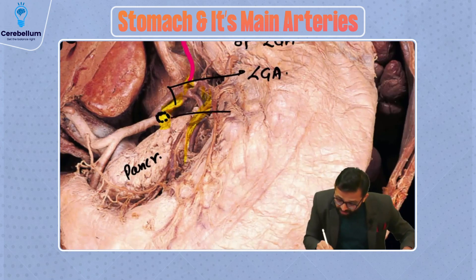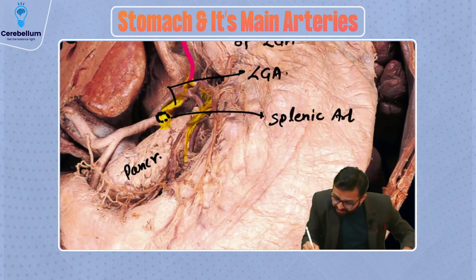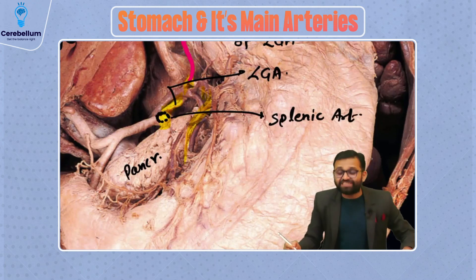This particular artery is running at the bed of the stomach. That's why it is the splenic artery — a zigzag, tortuous artery.